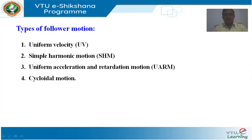Now we will discuss types of follower motion. There are four types: uniform velocity, simple harmonic motion, uniform acceleration and retardation motion, and cycloidal motion. Using these types of follower motion, according to the syllabus, we need to solve numericals in which we construct displacement diagrams, velocity and acceleration diagrams, and the construction of cam profile.